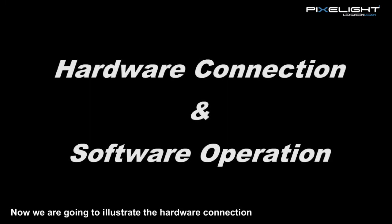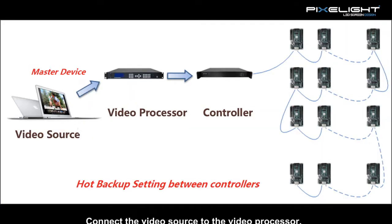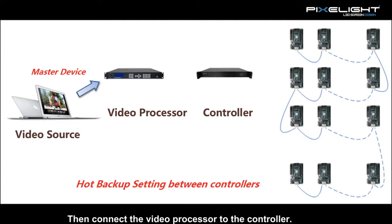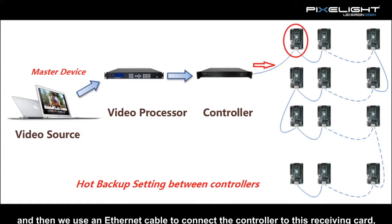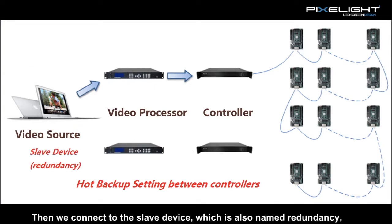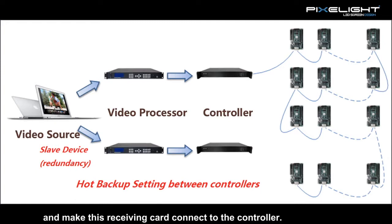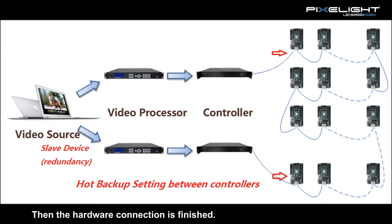Now we will illustrate the hardware connection and software operation for these two hub backup systems. For hub backup between controllers, first connect the master device: connect the video source to the video processor, then connect the video processor to the controller, and use an Ethernet cable to connect the controller to the receiving card. Next, make these receiving cards in a cascade. Then connect the slave device, also named the redundancy: similarly connect the video source to the video processor, and connect the receiving card to the controller. The hardware connection is now finished.